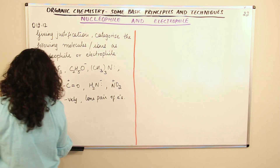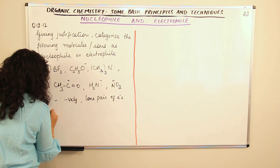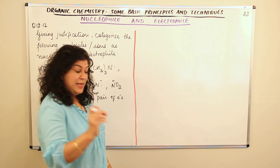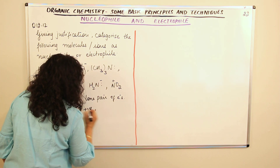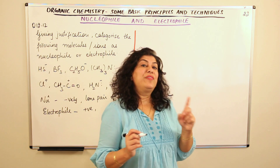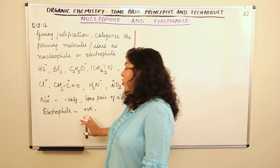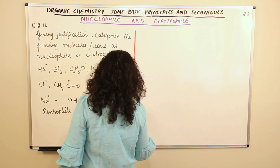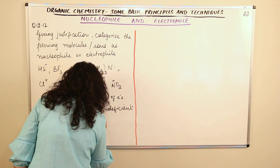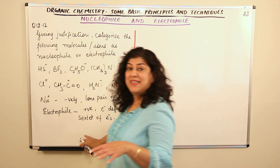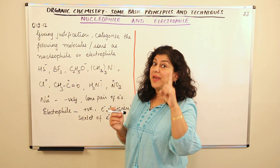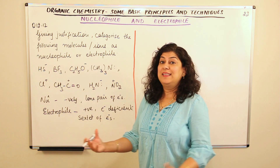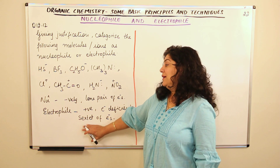An electrophile, on the other hand, is attracted to electrons. It is either positively charged or has a sextet of electrons — meaning its octet is not complete and it is electron deficient. Anything that donates a pair of electrons is a nucleophile; anything that accepts a pair of electrons is an electrophile.